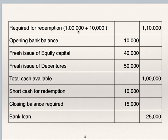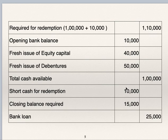Amount required for redemption is Rs. 1,00,000 plus Rs. 10,000, that is capital plus premium, totalling Rs. 1,10,000. Opening bank balance is Rs. 10,000. By issuing fresh equity shares the company will receive Rs. 40,000. By issuing debentures the company will receive Rs. 50,000. So Rs. 10,000 plus Rs. 40,000 plus Rs. 50,000 gives Rs. 1,00,000 cash available. But the amount required for redemption is Rs. 1,10,000. So the shortfall in cash for redemption is Rs. 10,000. Closing bank balance required is Rs. 15,000. Therefore bank loan required is Rs. 25,000, i.e. Rs. 10,000 plus Rs. 15,000.